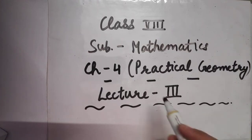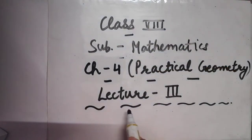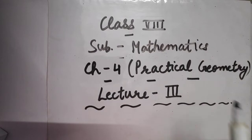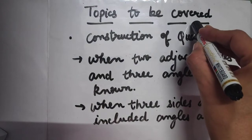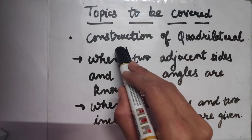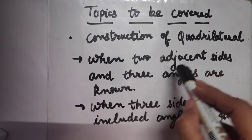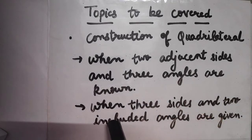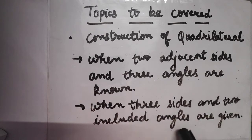Good morning everyone. Welcome to mathematics class of grade 8. This is lecture number 3 of chapter number 4, practical geometry. In this lecture we shall learn how to construct a quadrilateral when two adjacent sides and three angles are known to us, and second, how to construct a quadrilateral when three sides and two included angles are given.